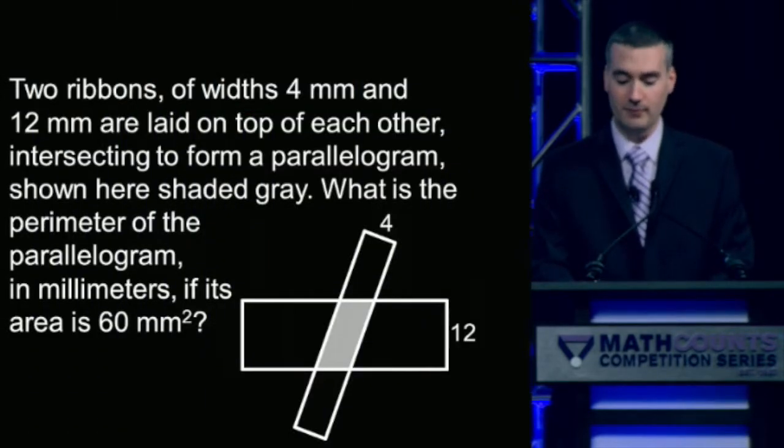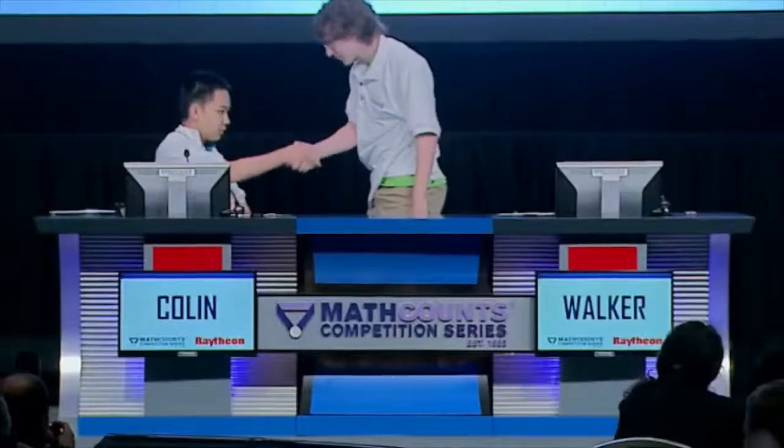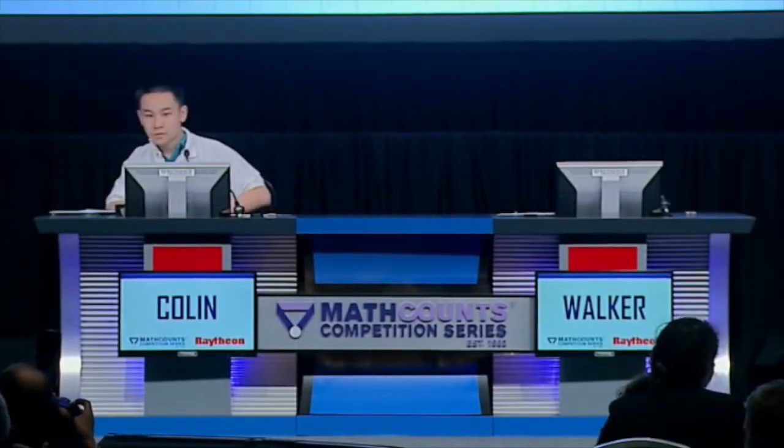So we have a tie score of 2 apiece as we head into the fifth question of our matchup. Two ribbons of widths 4 millimeters and 12 millimeters are laid on top of each other, intersecting to form a parallelogram shown here shaded gray. What is the perimeter of the parallelogram in millimeters if its area is 60 square millimeters? The answer is 40, and 40 is the correct answer, which means that Colin has won the matchup.